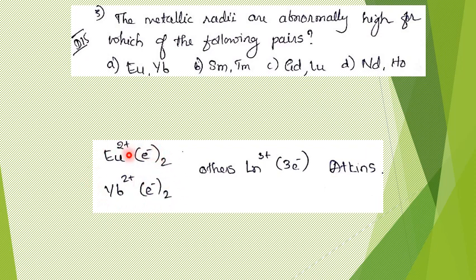Since other lanthanoids mostly exist as Ln³⁺ in solid state, higher charge means smaller size. Eu and Yb prefer Ln²⁺, so they have relatively larger sizes. This explanation is from Atkins. Another explanation (from Huheey) cites more intra-electron repulsion in 4f⁷ and 4f¹⁴ configurations. The answer is europium and ytterbium — option A.